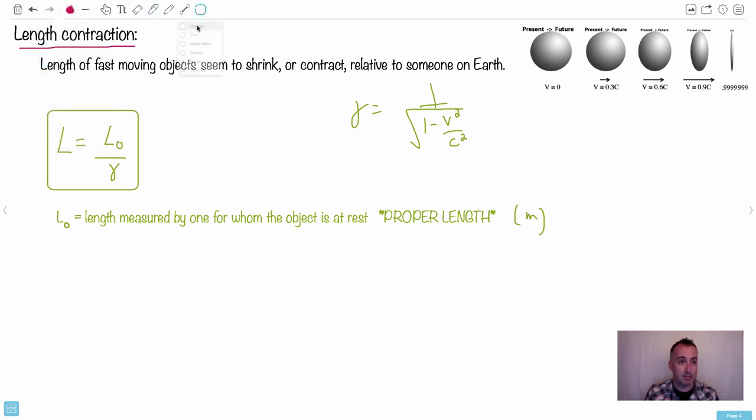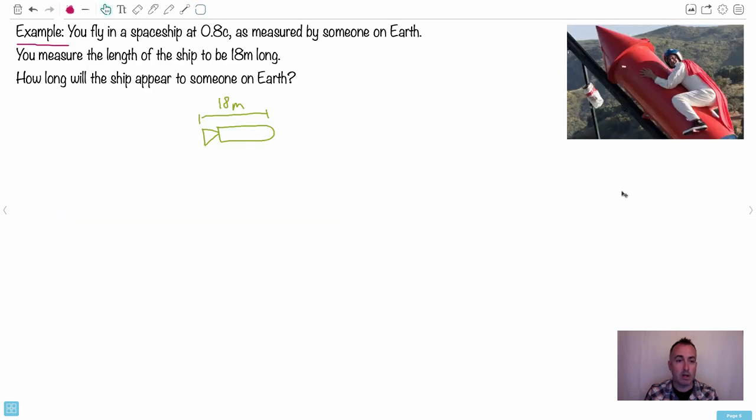Because you're measuring the spaceship. To you, the spaceship is at rest. See, to you, the spaceship isn't moving. So because of that, then that's going to be what we call the proper length. So I'm going to put that down so we know that L₀ is going to be 18 meters.